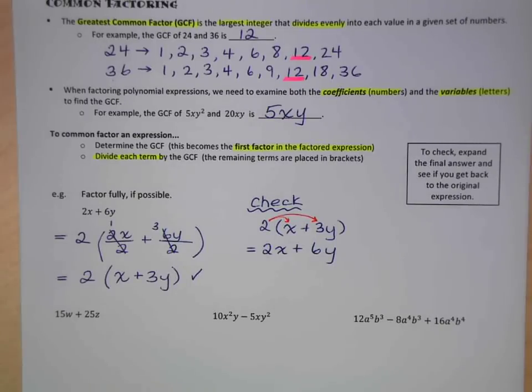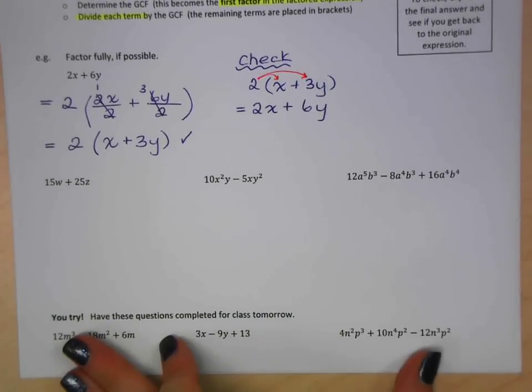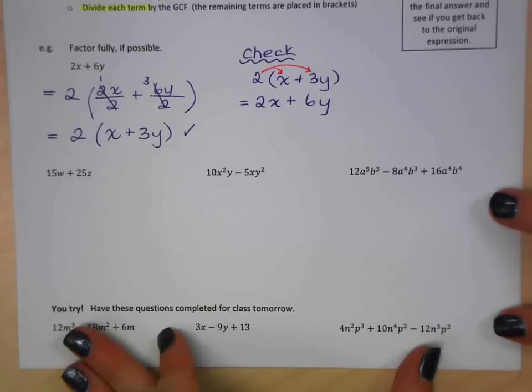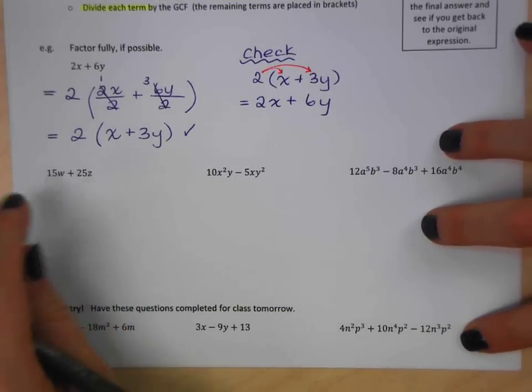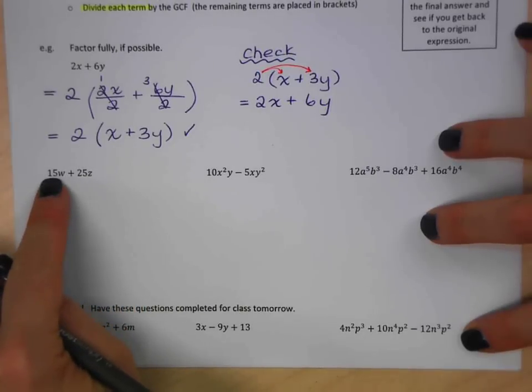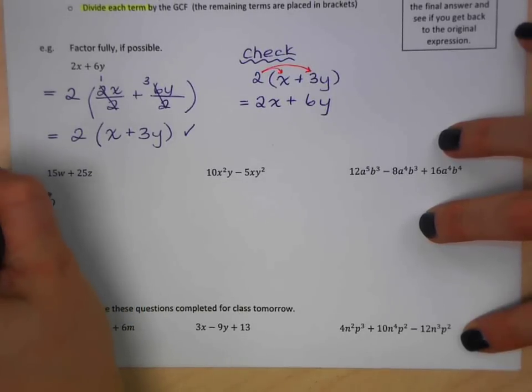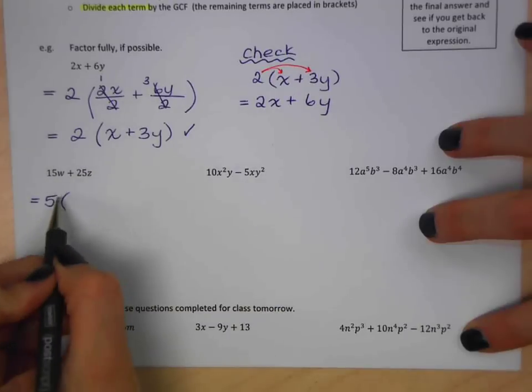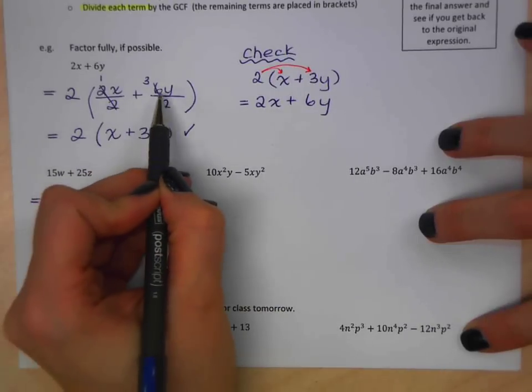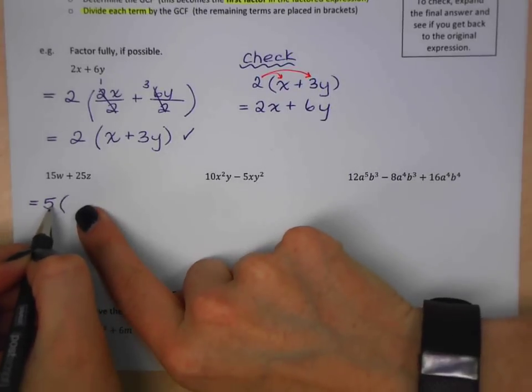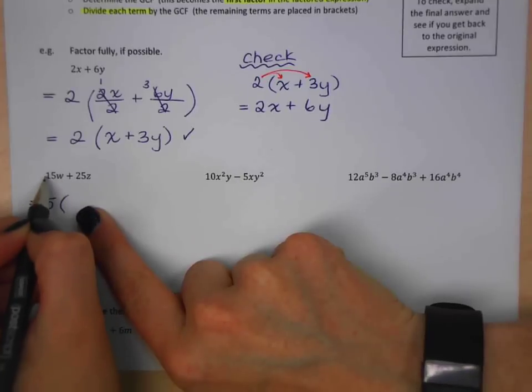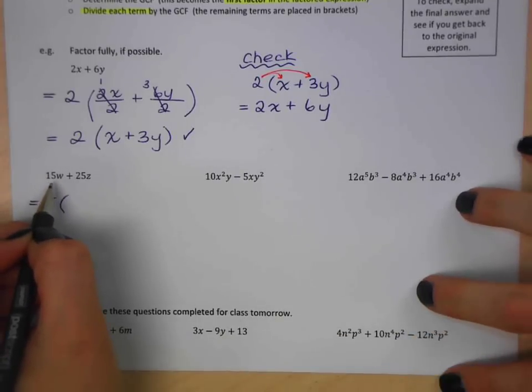So you can always check if you have time at the end of a test and you're not sure about a question. That's the process to just double check. Let's try another one. So here we have 15w plus 25z. So first look at the coefficients. I have 15 and 25. The greatest common factor between these two numbers is 5.